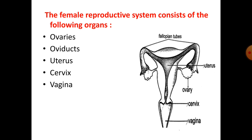Next is the uterus. It is a hollow, pear-shaped muscular organ connected to the fallopian tubes on both sides. The development of the fertilized egg takes place within the uterus.